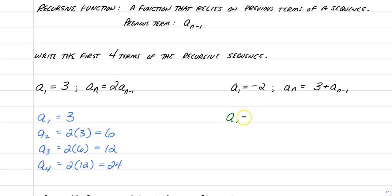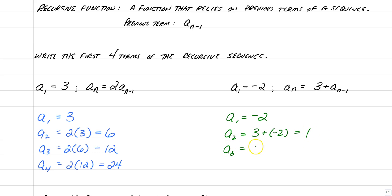A sub 1 equals negative 2 as given. A sub 2 is 3 plus the previous term of negative 2, giving us 1. A sub 3 is 3 plus the previous term 1, giving us 4. And a sub 4 is 3 plus the previous term 4, equals 7. Those are the first four terms of that recursive sequence.